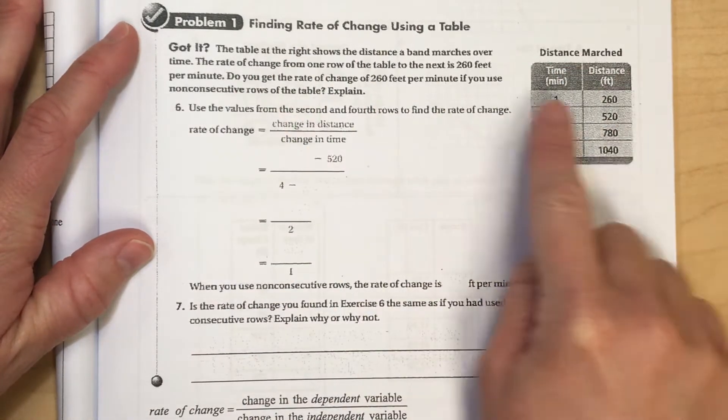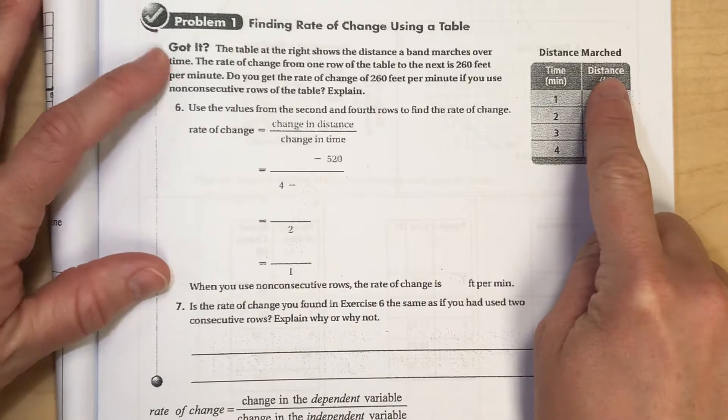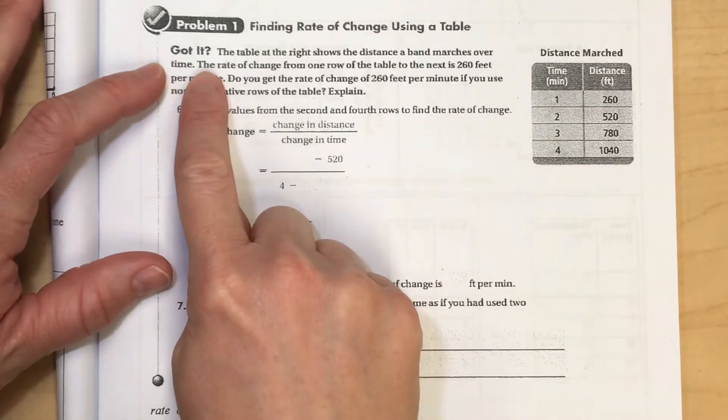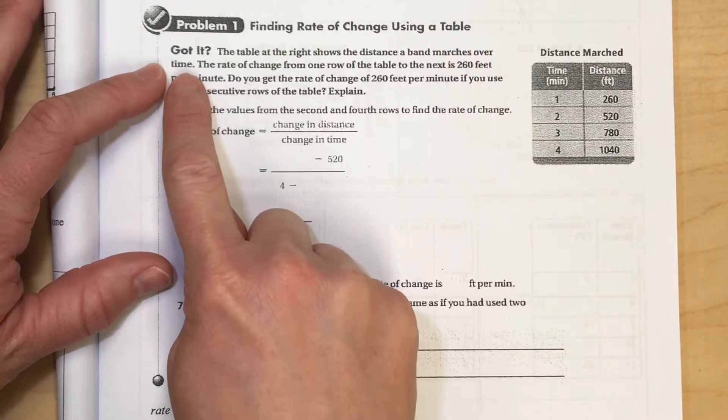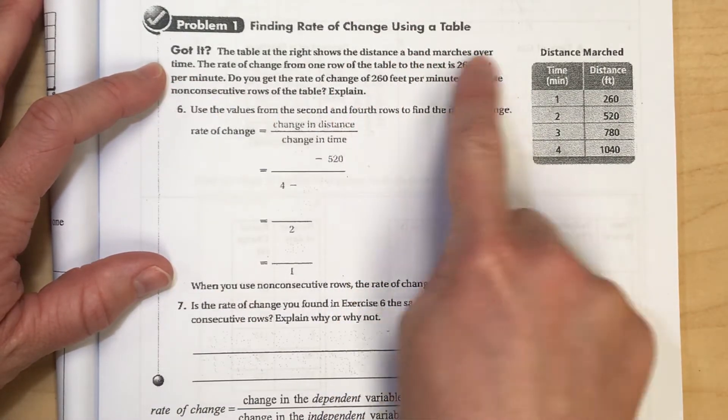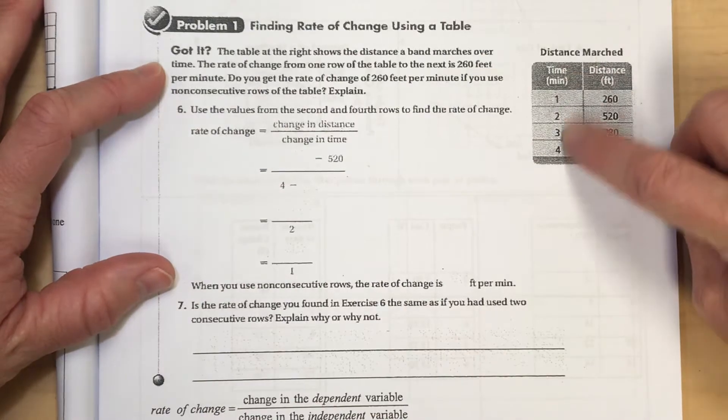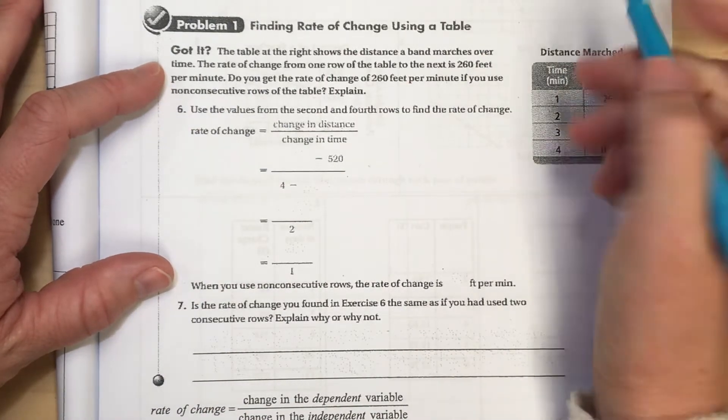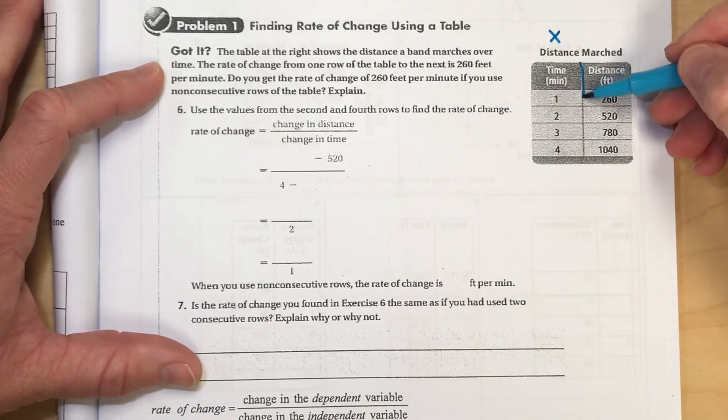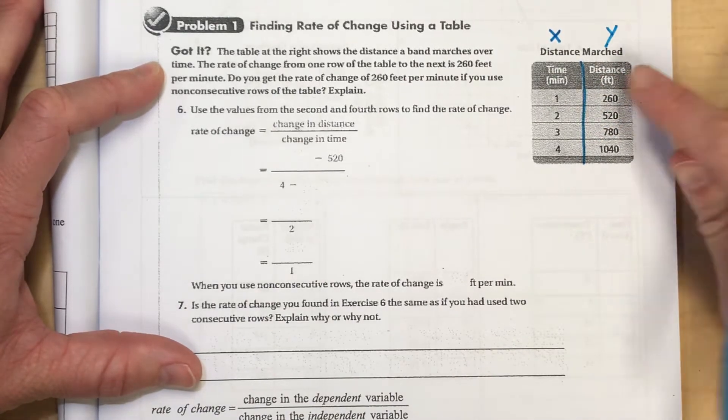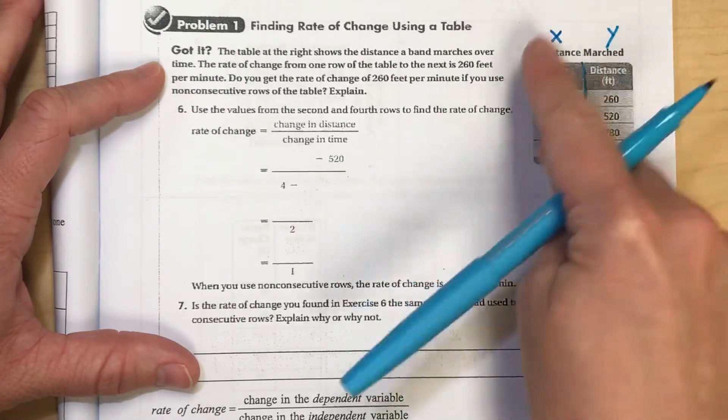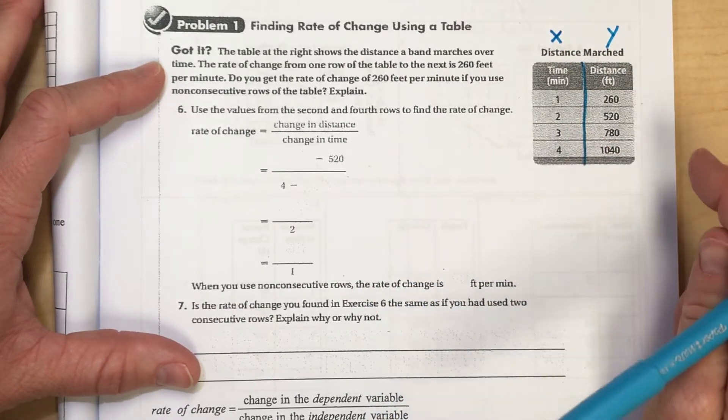And the table at the right shows the distance that a band is going to march over time. So in this column here, you'll see distance over time. The distance the band marches over time. So time is this column over here. And normally when you see a table of values, the x is on the left, and the y values are on the right. And if that's not labeled for you ahead of time, you can almost always assume that that's the pattern that your table is going to talk about.